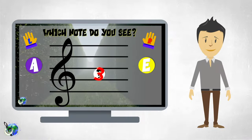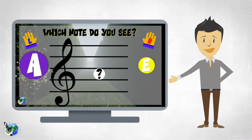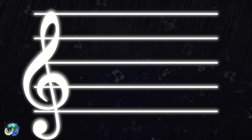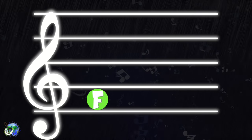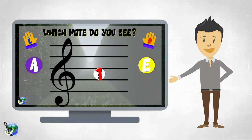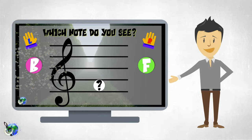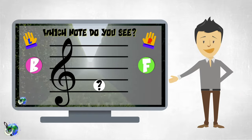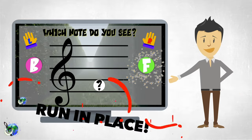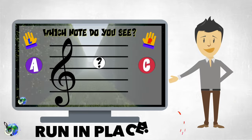Challenge 1: You will see a music note on the treble clef staff's spaces. Remember, the spaces on the treble clef staff are F, A, C, E. On each side of the screen will be a letter. While running in place, put your left or right hand out to grab the letter that fits the note found on the space. You'll hear a countdown of 3, 2, 1. After the countdown, say the correct letter.